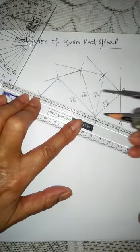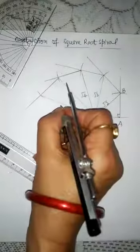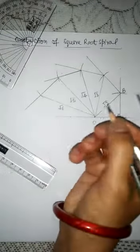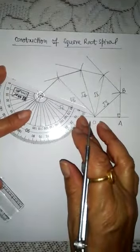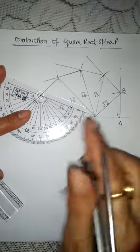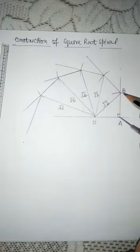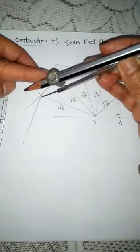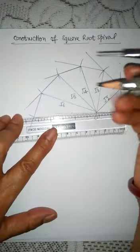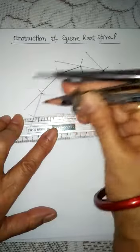Join this line to O, and again on this line — this will be root 6. On this line again we will draw a 90 degree angle, then again cut 1 inch. Join it with O — this will be root 7. Again make 90 degree.